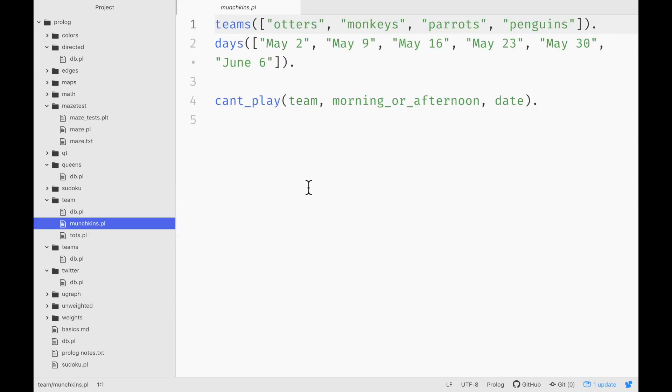So we have a team called the Munchkins. And the teams in this league are the otters, monkeys, parrots, and penguins. And the days that they can play are May 2nd, May 9th, May 16th, May 23rd, and so on. And so if I want to specify a constraint, here's what I do.